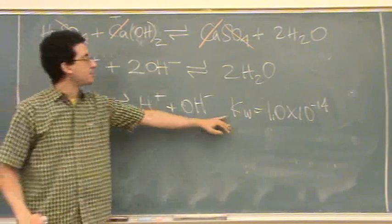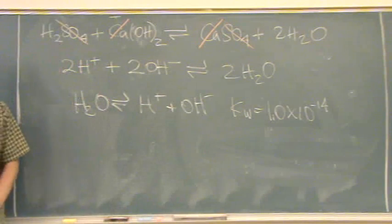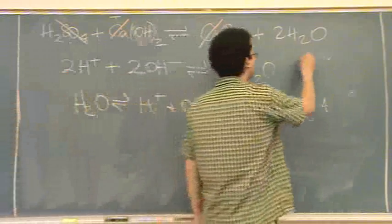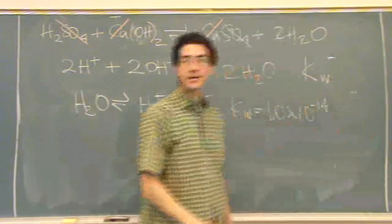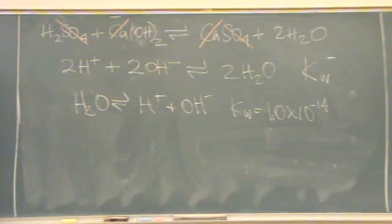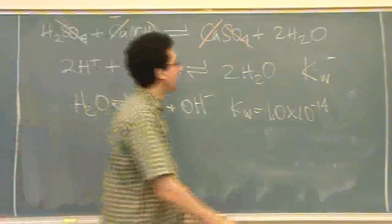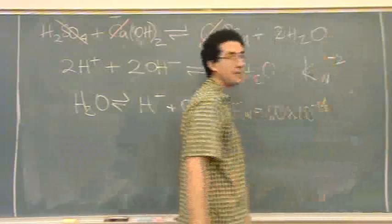When I flip a reaction, what happens to the K? Multiply 10 to the negative 1. Yeah. KW to the minus power. When I multiply through a reaction by 2, what happens to K? Square it. So this is KW to the minus 2 power.